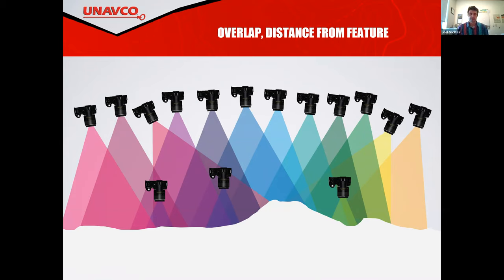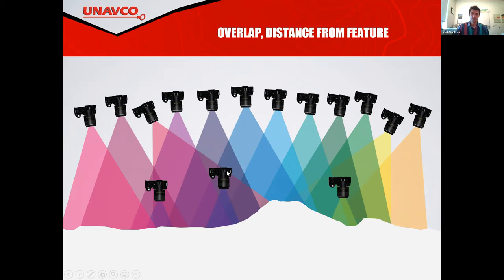We want a lot of overlap as much as we can. There's a trade-off between the time it takes to fly and the number of pictures taken, so that's more overlap versus less flight time. Drones have limited battery life — the battery life for this drone is somewhere around 25 minutes per flight, and then it has to land. You can change the batteries out. It's also important to get photos from different distances and angles; if there are particular features you want better resolution from, you can get closer and take more photos.